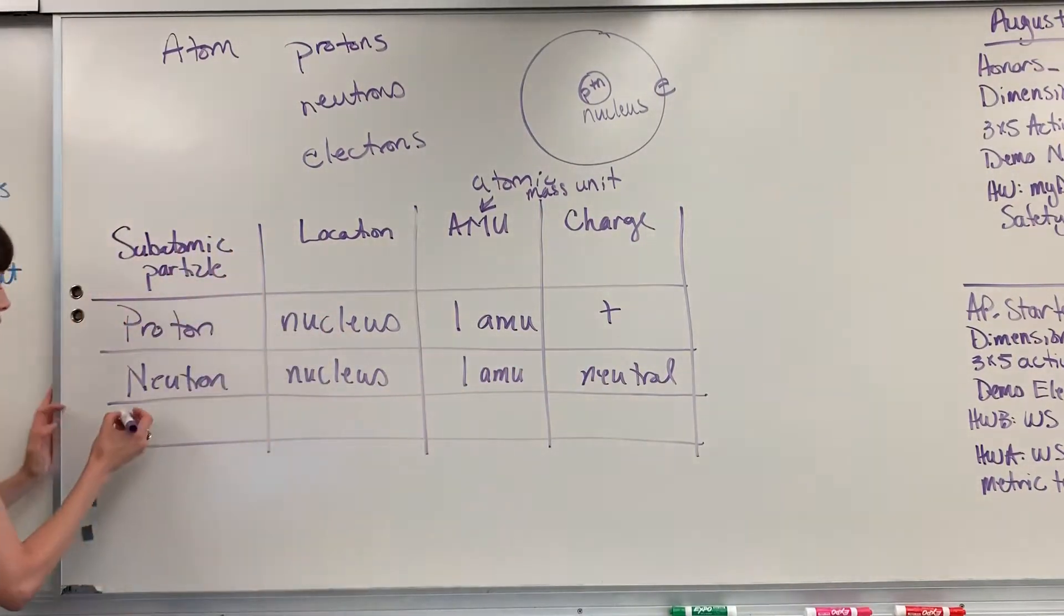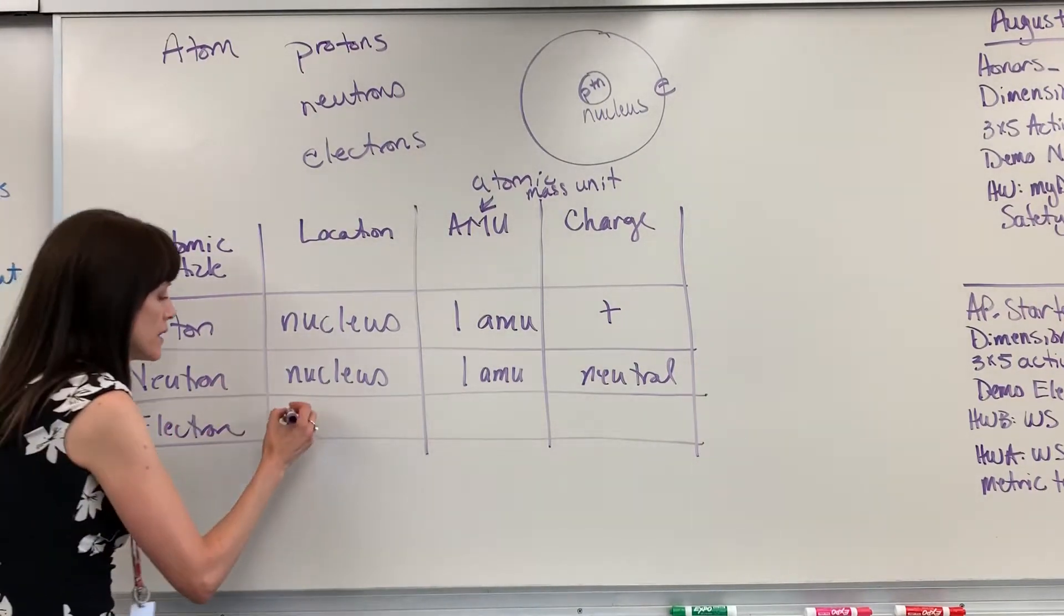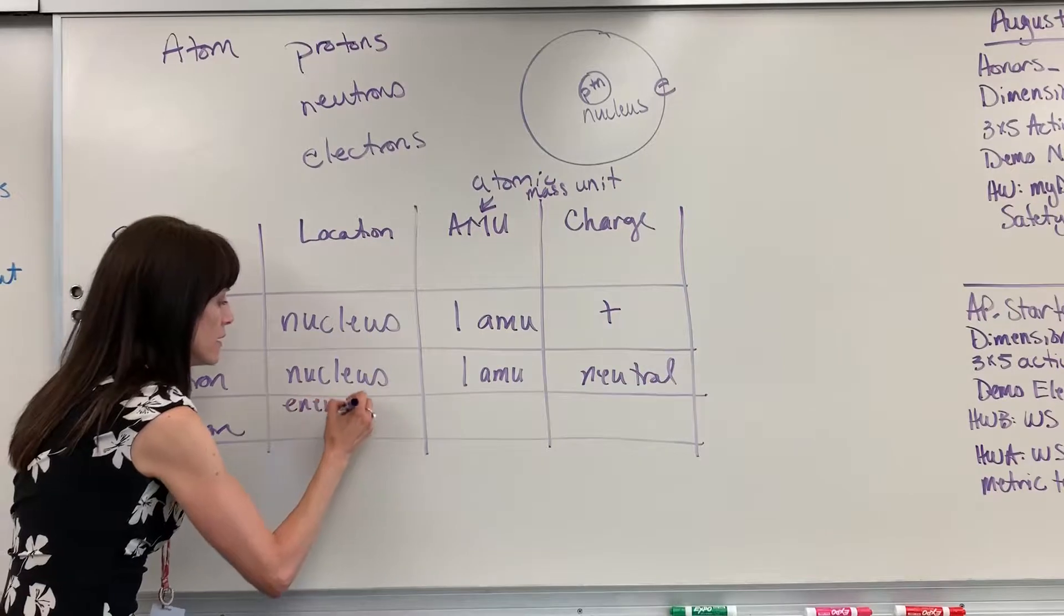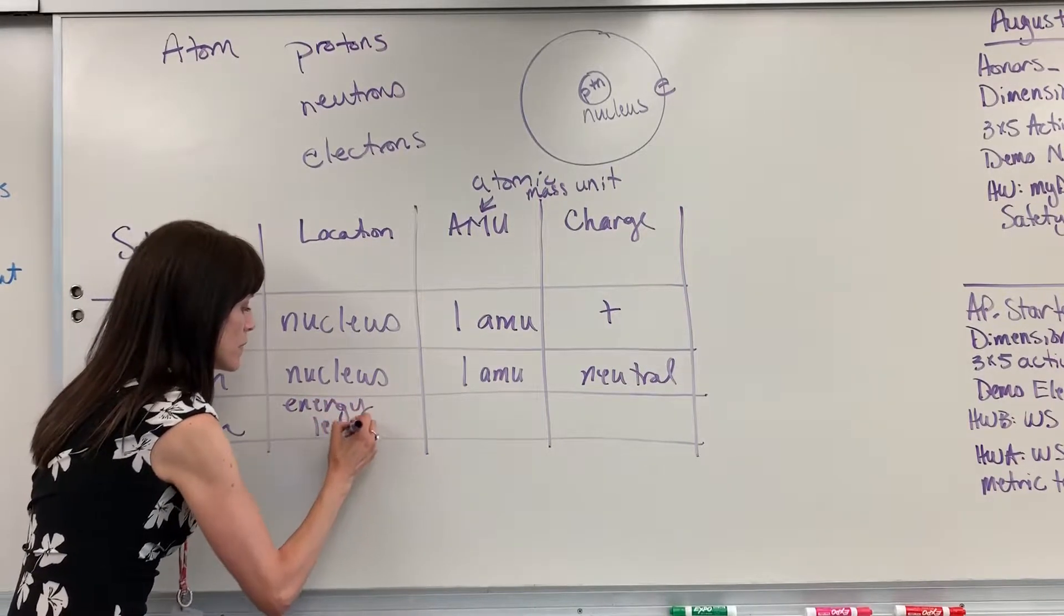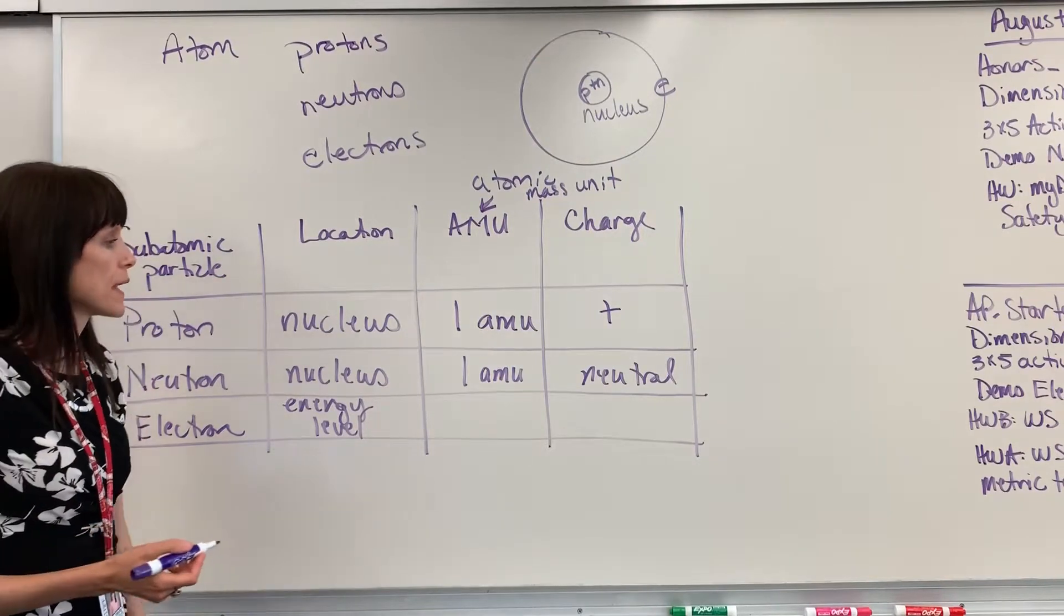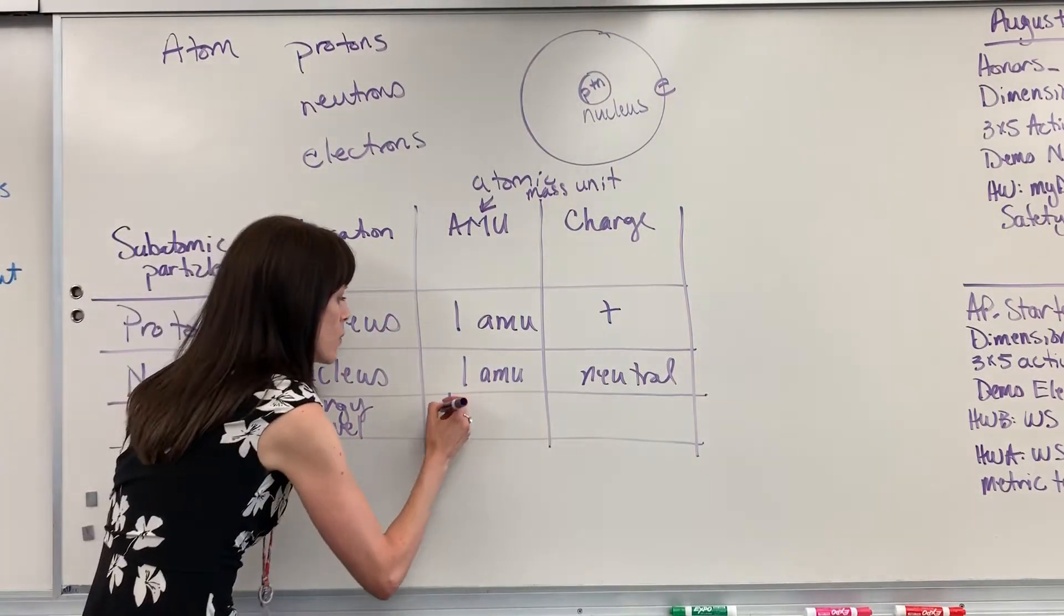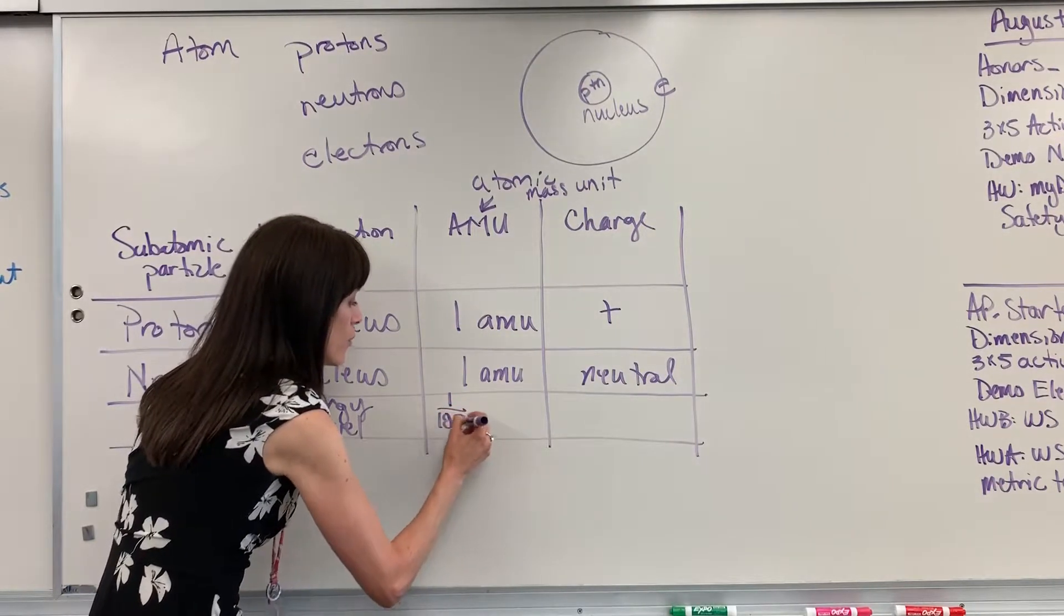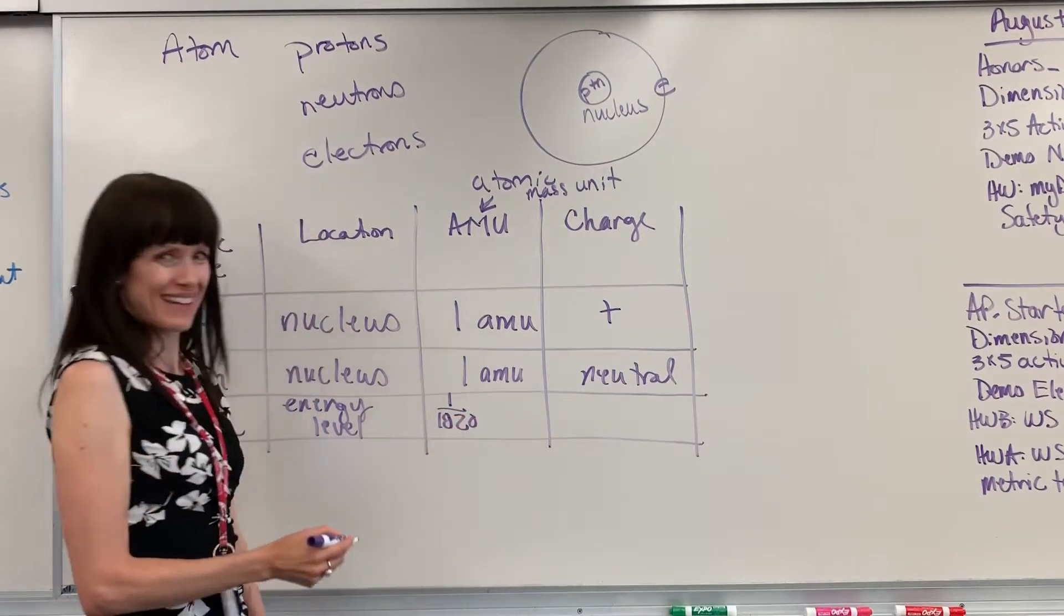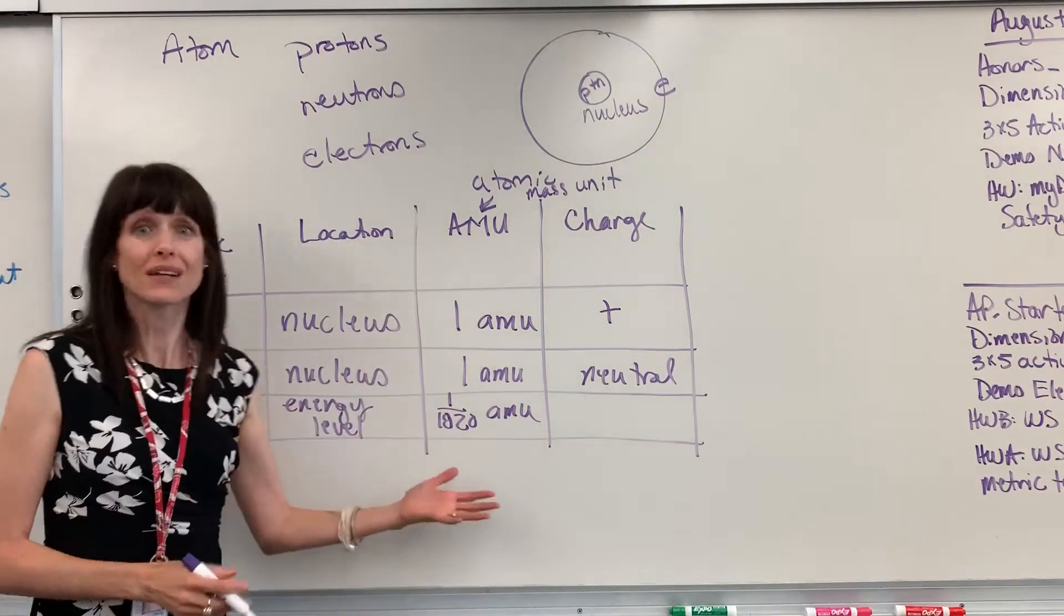Lastly, we have the electron. The electron is located in the energy levels—again, you could also say orbitals or shells. This is interesting, super tiny. It is one one-thousand eight-hundred twentieth amu.